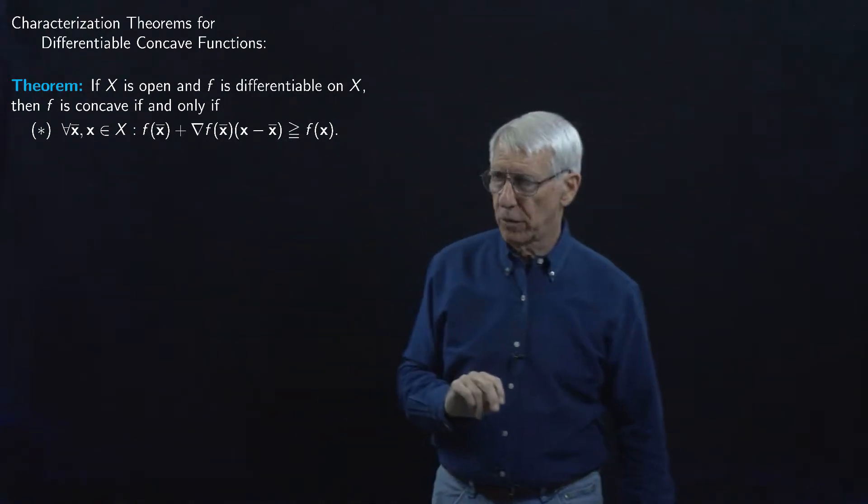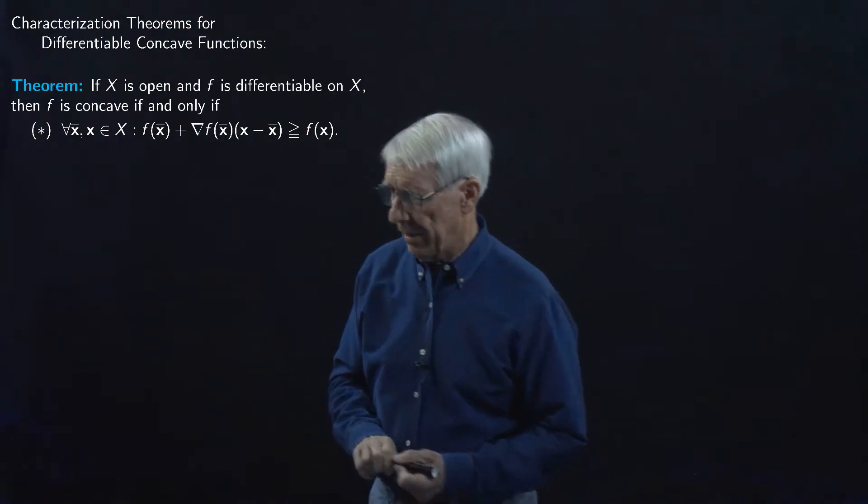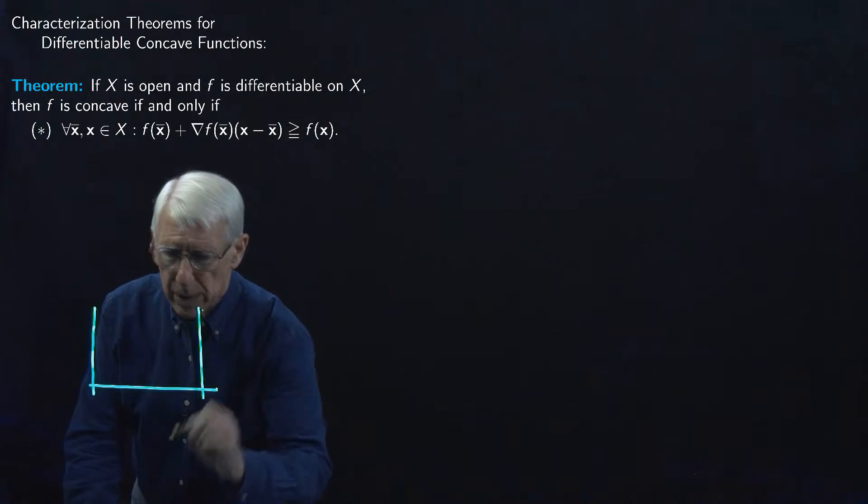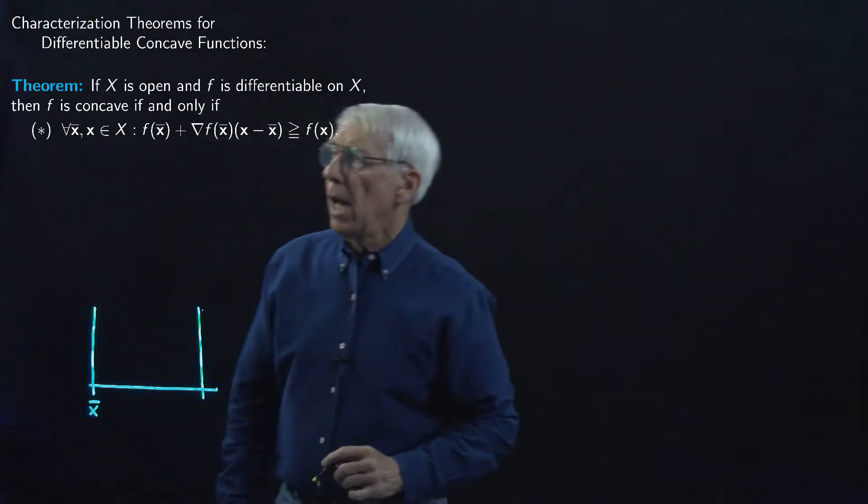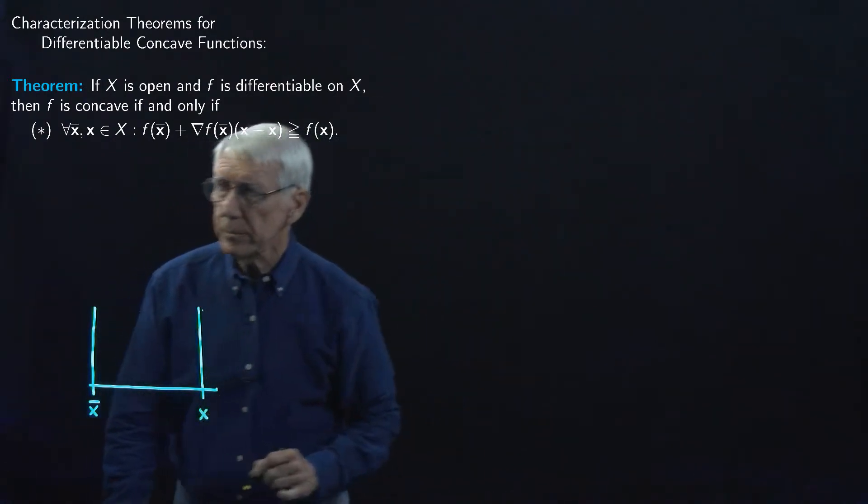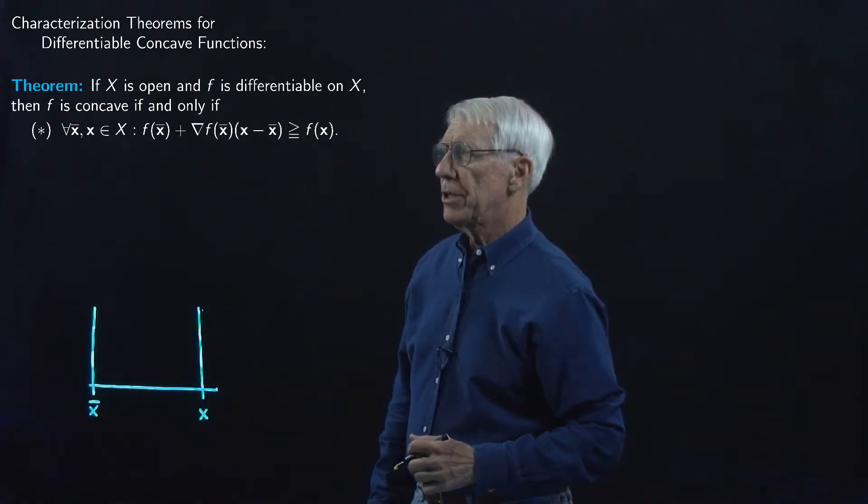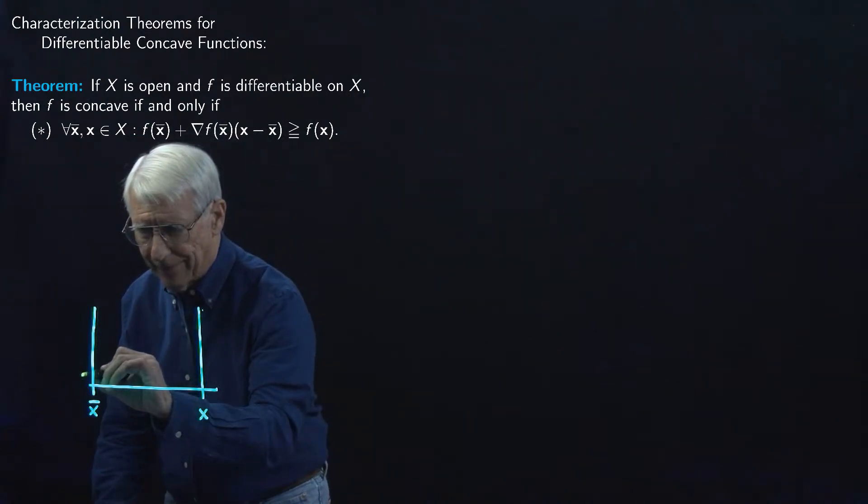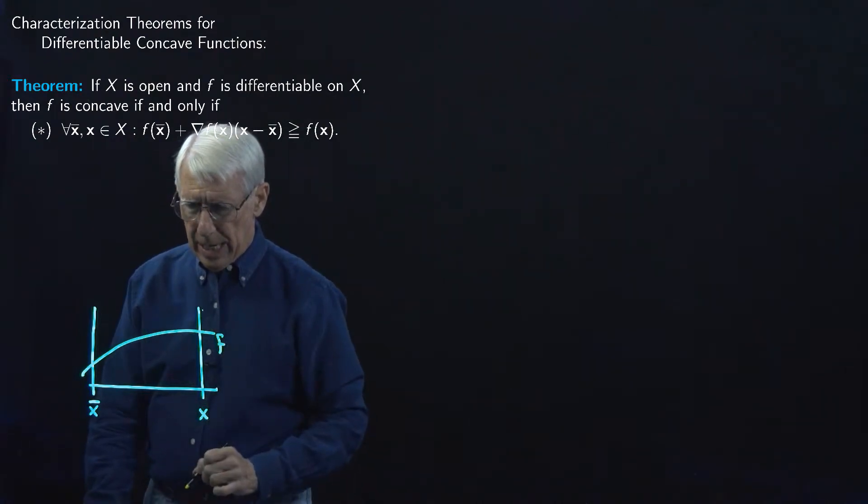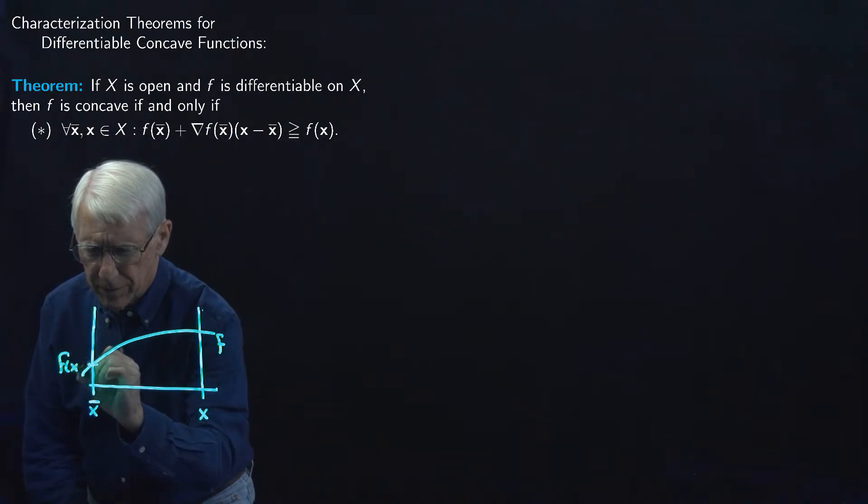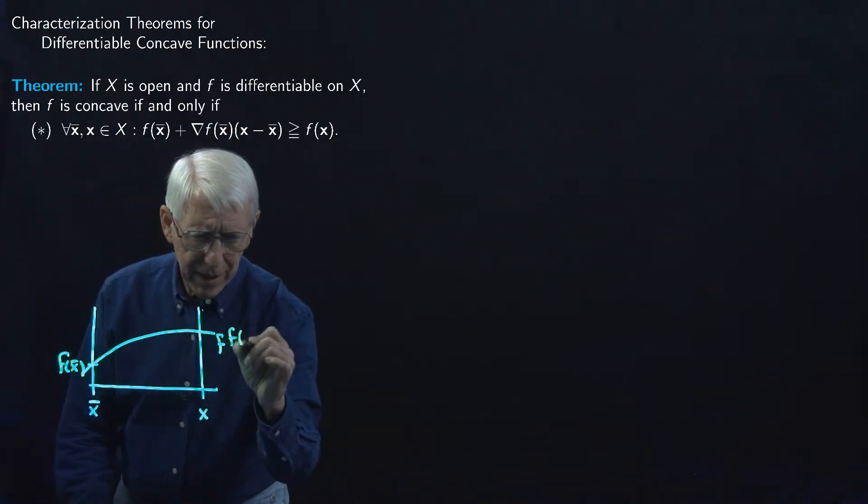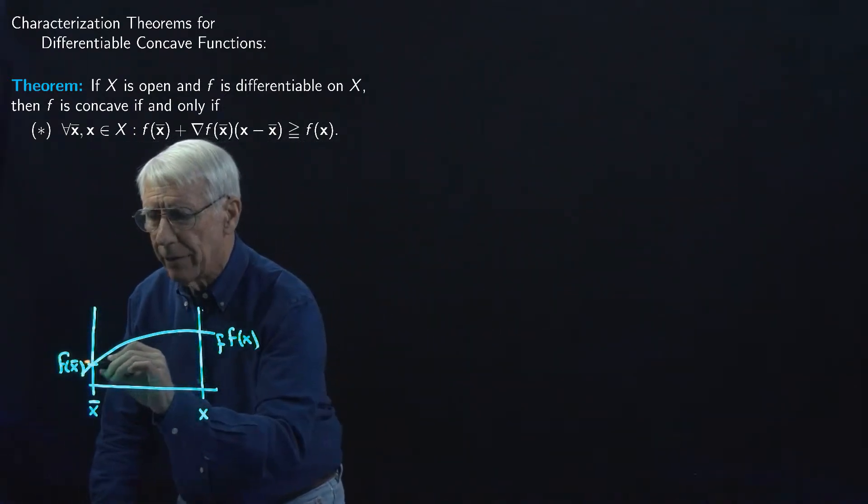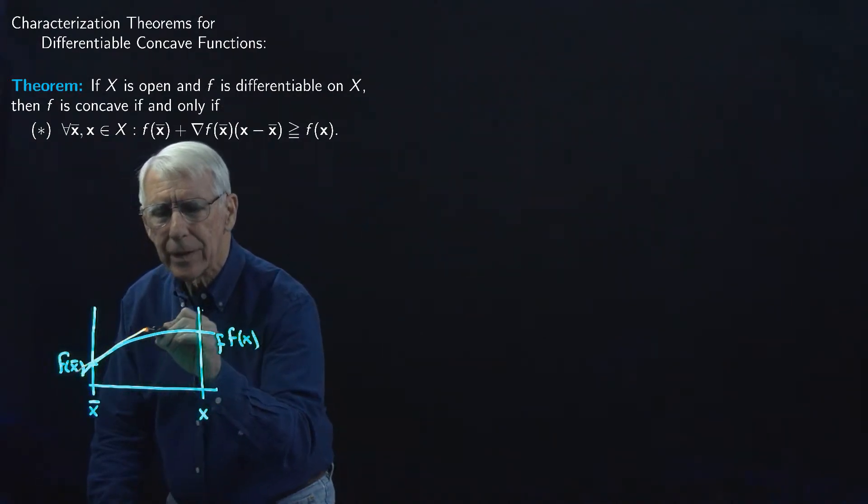So now let's see if we can draw a picture of what's going on there. Let's say this is X-bar, and let's say that this is X. This condition of the star says that it's got to be the case that, let me draw here my function F. Here we have F of X-bar.